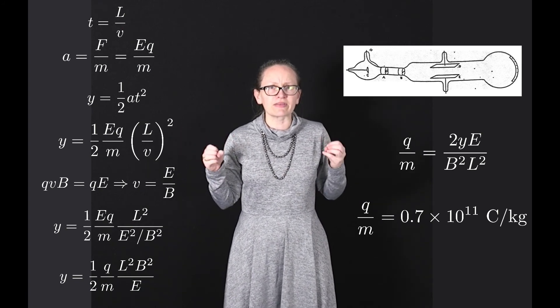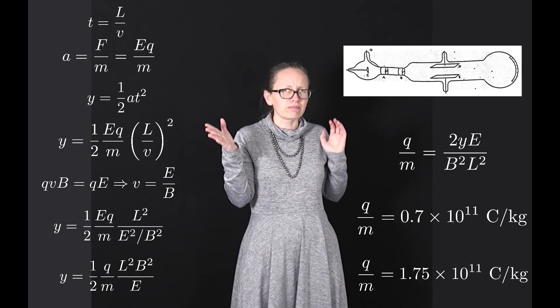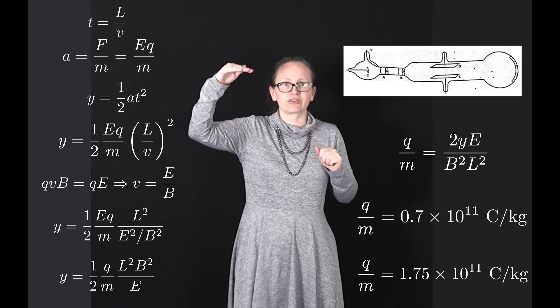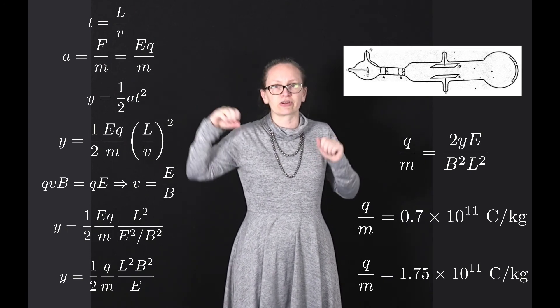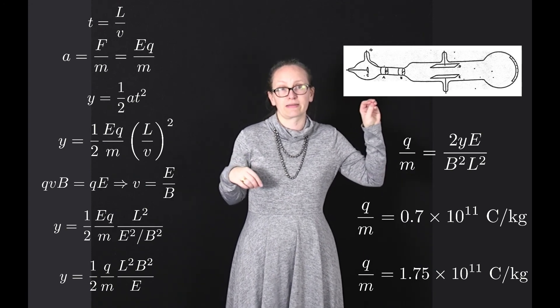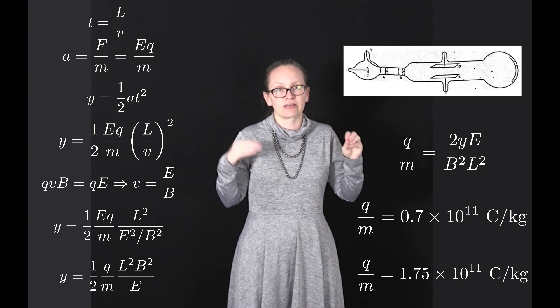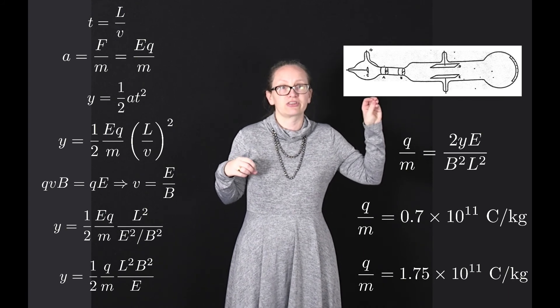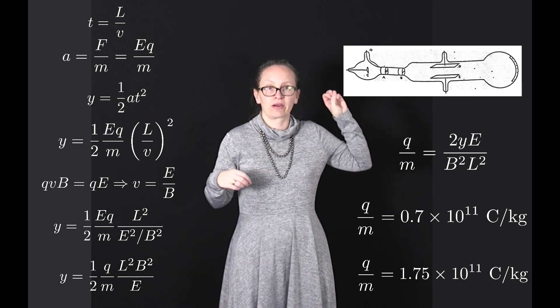Compared to the accepted value today, this is the same order of magnitude. The charge on the electron divided by the mass of the electron equals 1.602 times 10 to the minus 19 divided by 9.109 times 10 to the minus 31, which equals 1.75 times 10 to the 11 coulombs per kilogram.